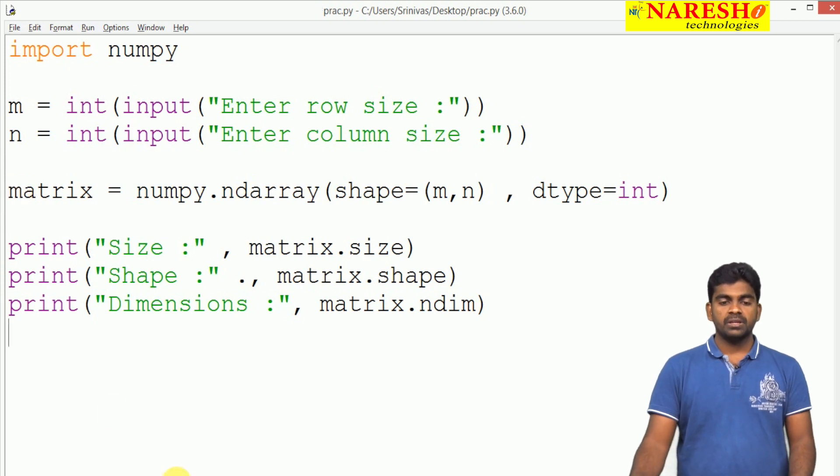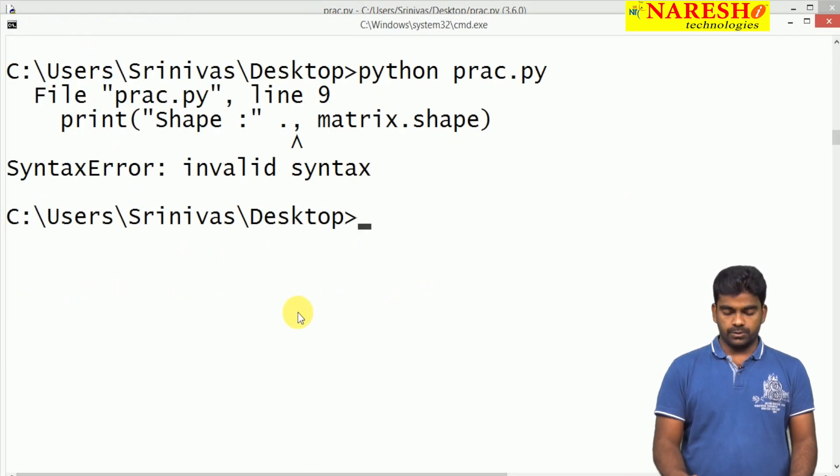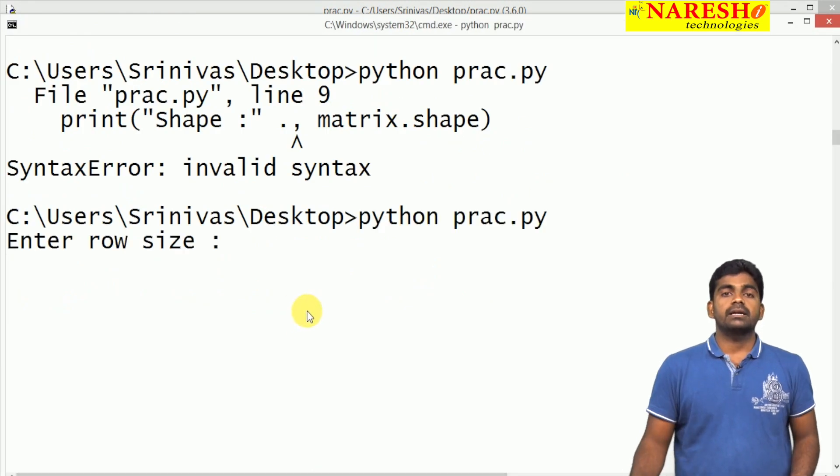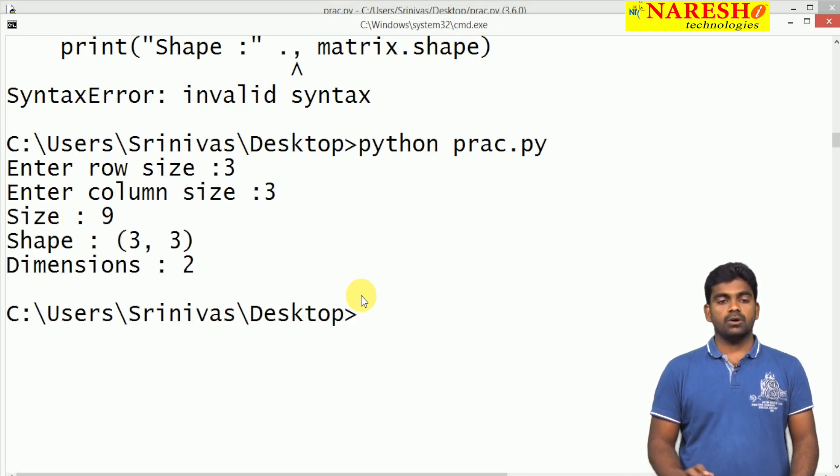When we execute this, it asks what is the row size? For example, three rows. What is the column size? Three columns.